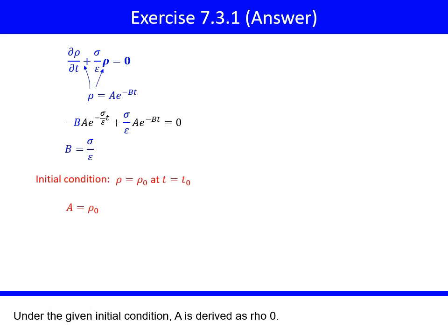Under the given initial condition, A is derived as ρ₀. Thus the charge density ρ is given by this equation. τ is the time constant. It is expressed by this equation.